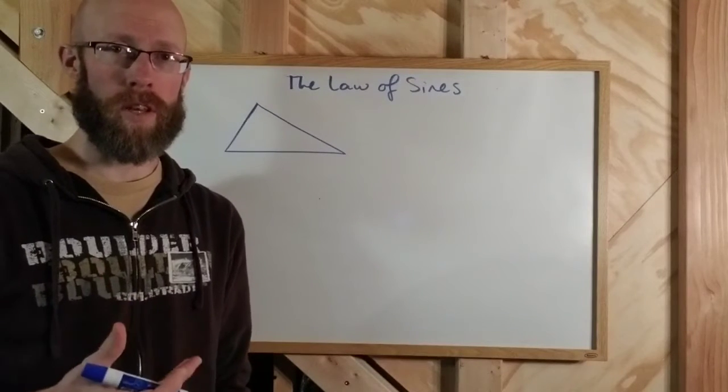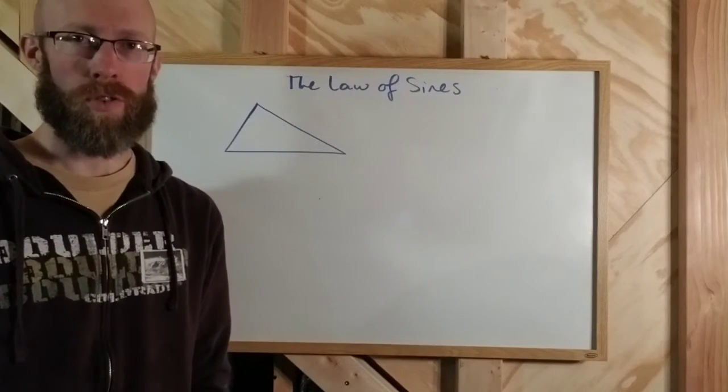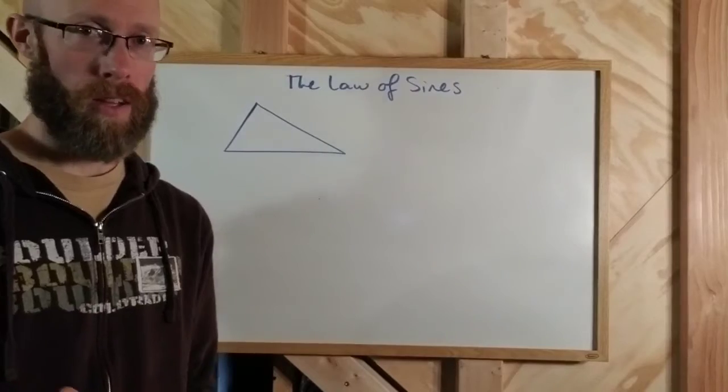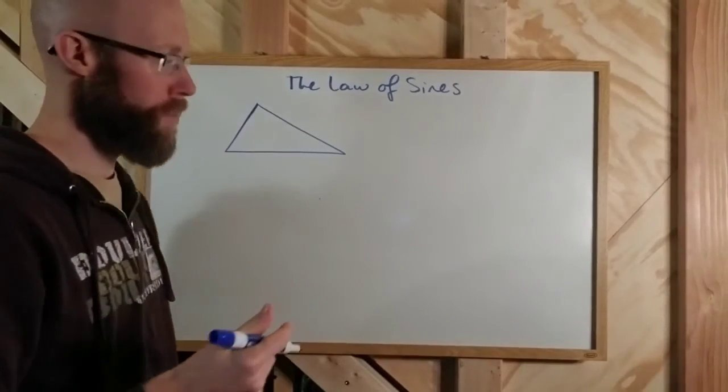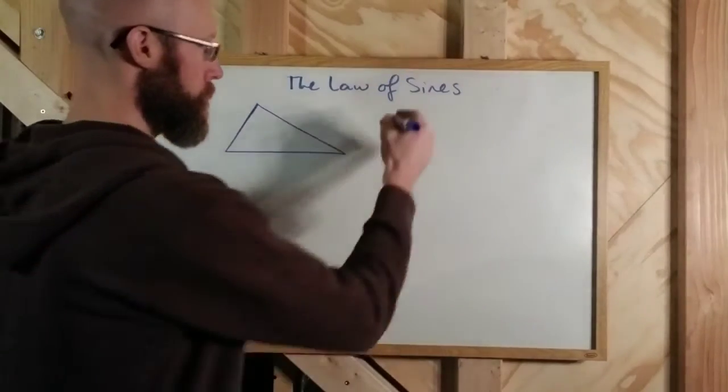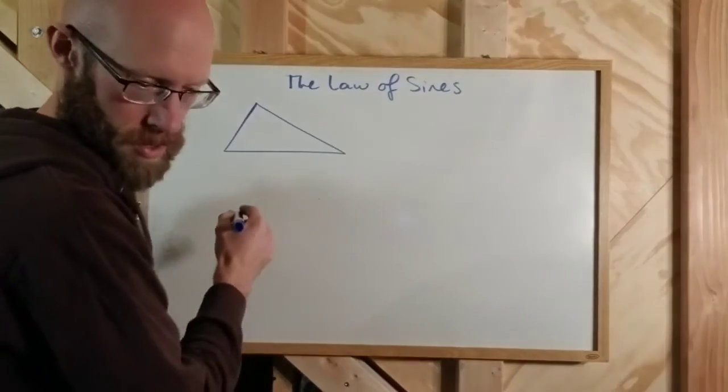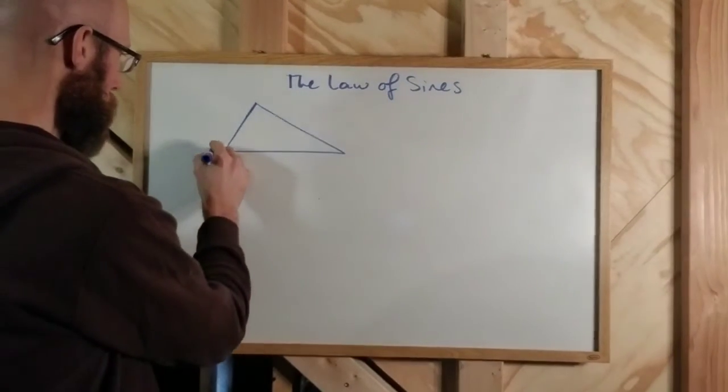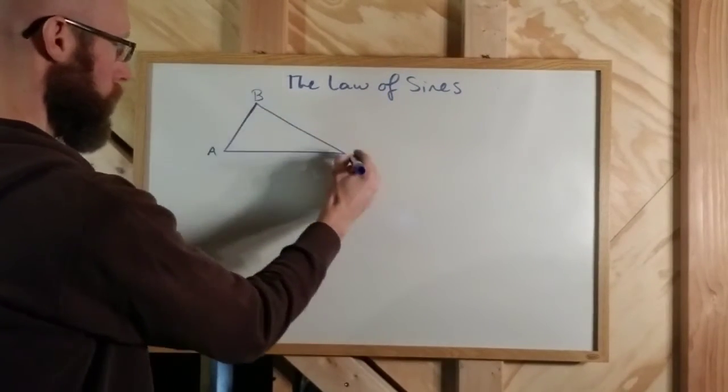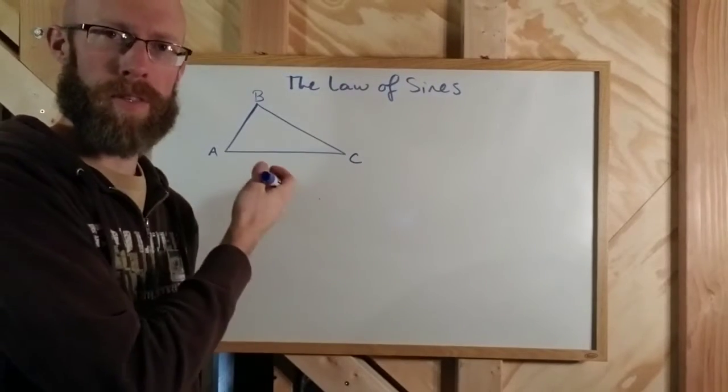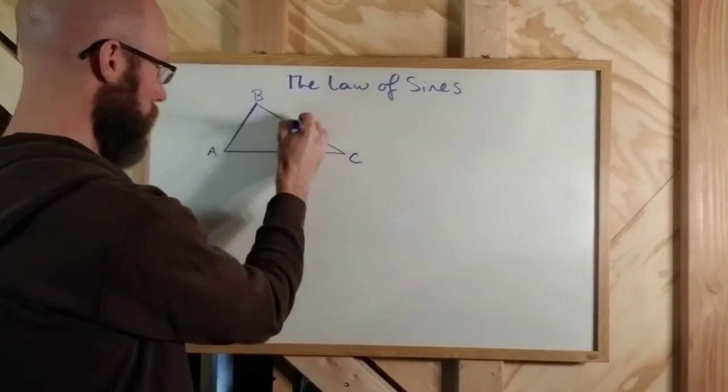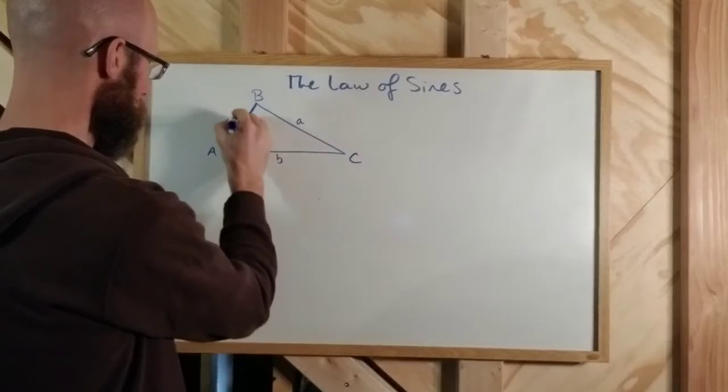A couple things to consider. Remember, when we were solving triangles in the past with right triangles, we know that the sum of the angles, we'll call these angles A, B, and C. And then the opposite sides we'll call little a, little b, and little c.